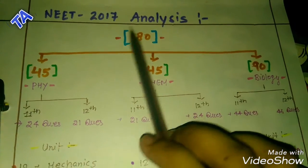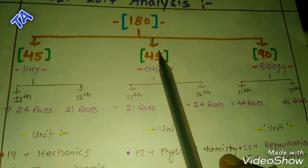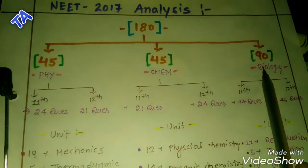First of all, we know that NEET 2018 has 180 questions total: 45 in physics, 90 in biology, and 45 in chemistry.